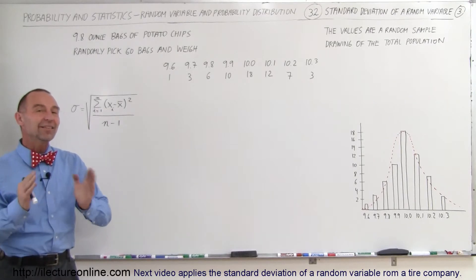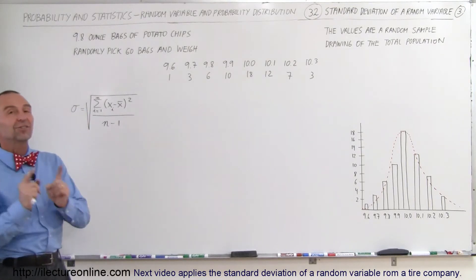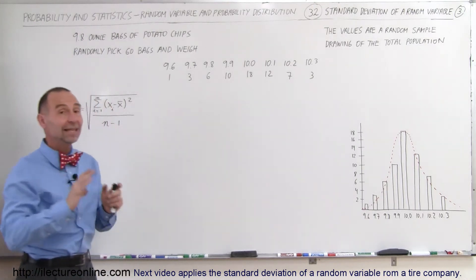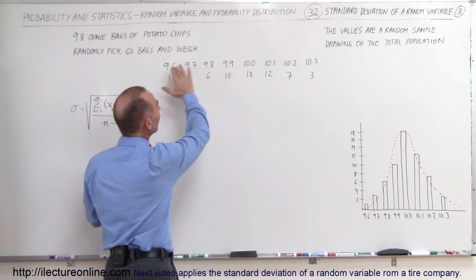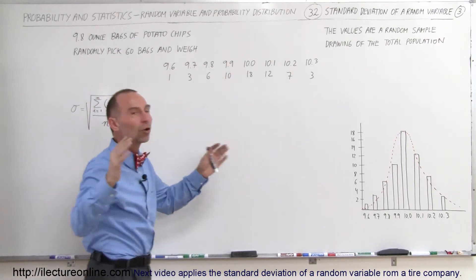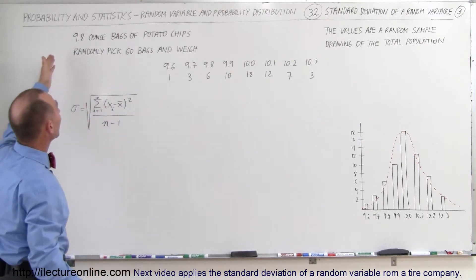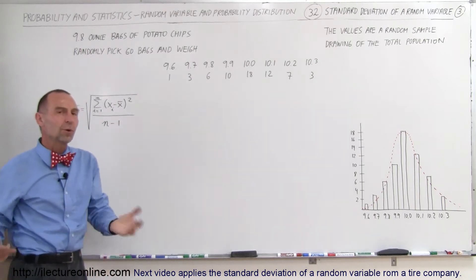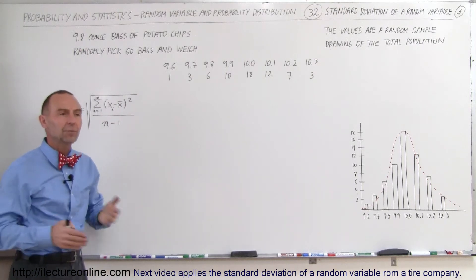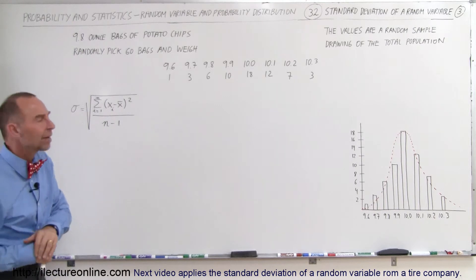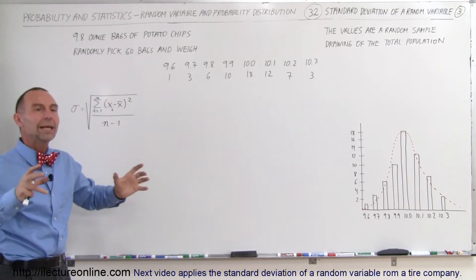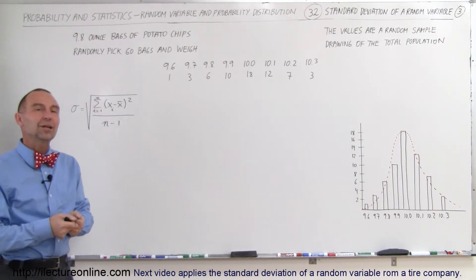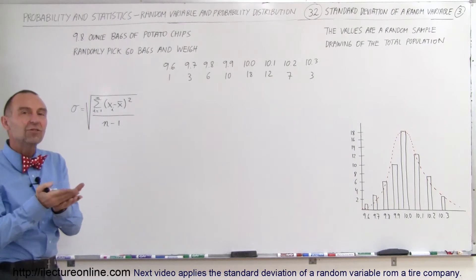Welcome to ElectronLine. In this example we're going to show you how to find the standard deviation of a random variable — specifically for a sample. It is indeed a sample picked from a very large population. For example, we have a potato chip factory that produces 9.8 ounce bags of potato chips, and we're wondering how many ounces are in each bag. We produce thousands of bags per day, so we're going to randomly pick 60 bags, open them up, weigh the chips, and find out the weight.